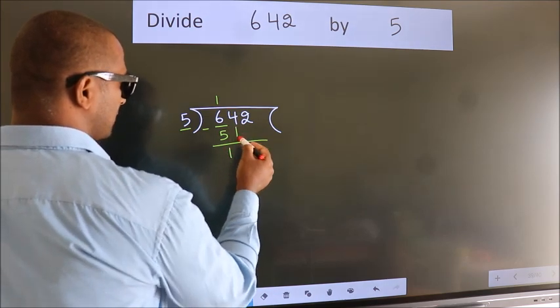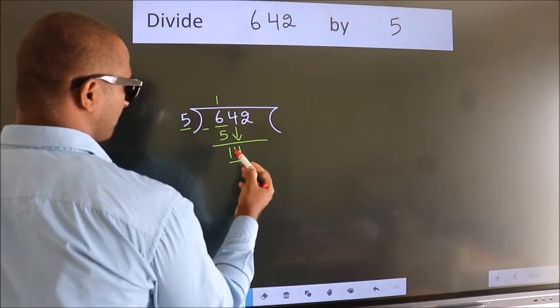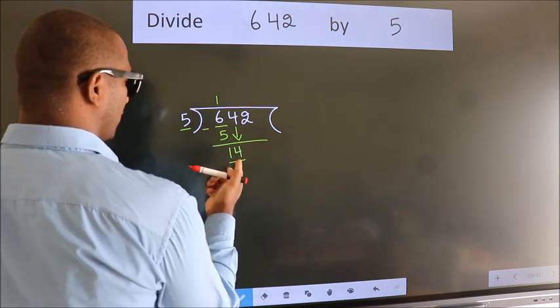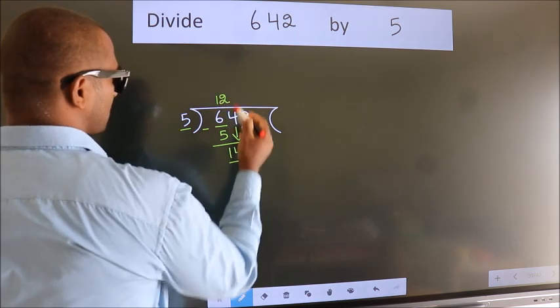After this, bring down the beside number. So, 4 down. So, 14. A number close to 14 in 5 table is 5 2s 10.